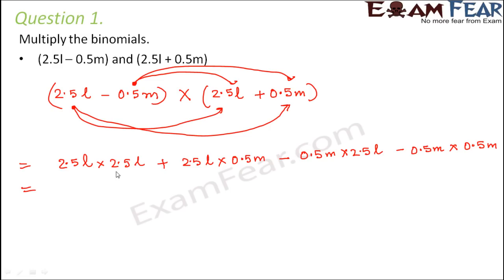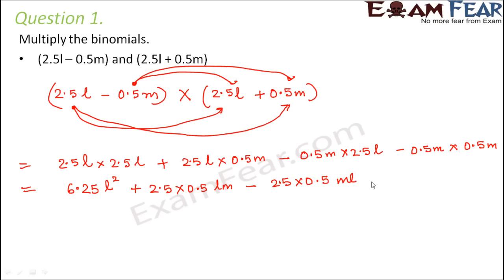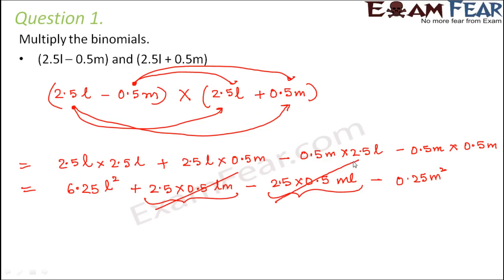So let us perform the multiplication. 2.5 into 2.5 is 6.25, and L into L is L squared. Similarly, 2.5 into 0.5 gives the LM term, and again 2.5 into 0.5 gives the ML term. Then 0.5 into 0.5 is 0.25, and M into M is M squared. Now if you compare the middle two terms, both are like terms equal in value — one with a plus sign, the other with a minus sign — so they cancel out and give zero. Therefore, the final answer is 6.25L squared minus 0.25M squared.